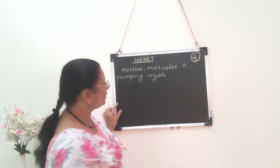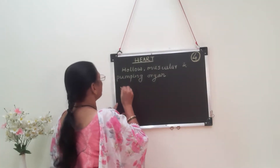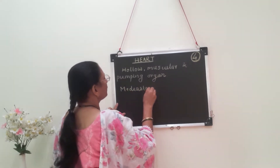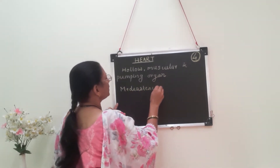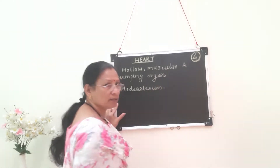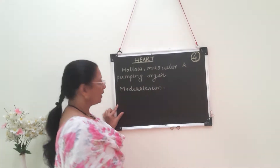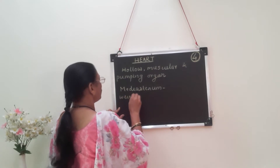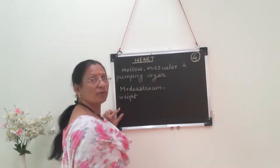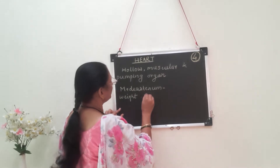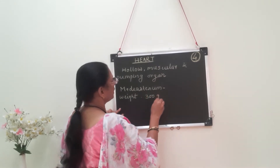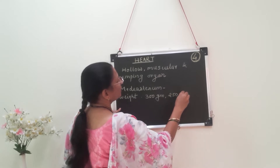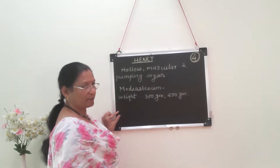Where is the heart situated? The heart is in the mediastinum — its position is mediastinum, which means it is present between the two lungs. The weight of the heart is 300 grams in males and 250 grams in females.